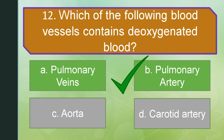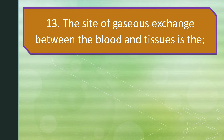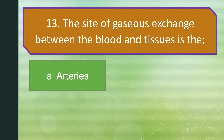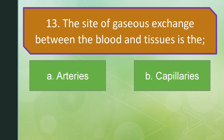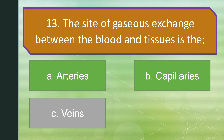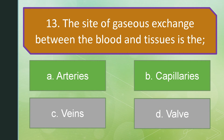Number 13. The site of gaseous exchange between the blood and tissues is the blank. Letter A: Arteries. Letter B: Capillaries. Letter C: Veins. Or letter D: Valve. The correct answer is letter B: Capillaries.